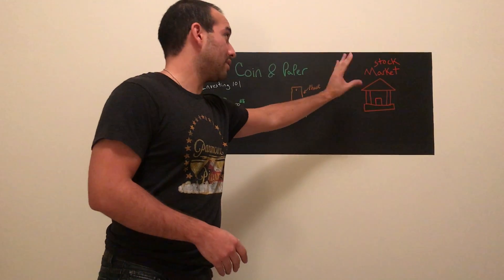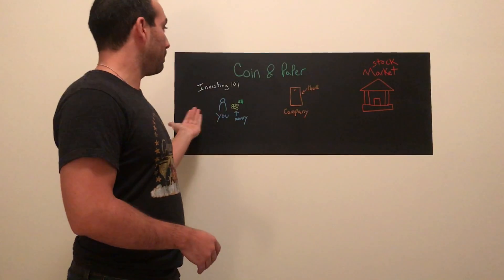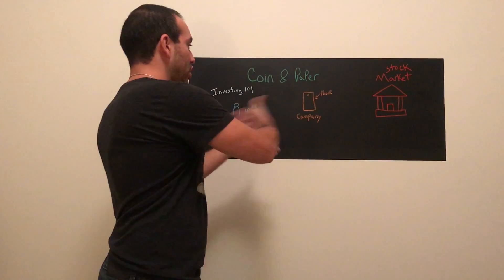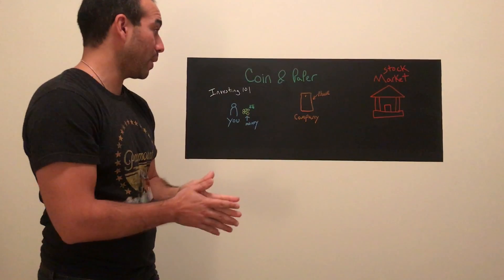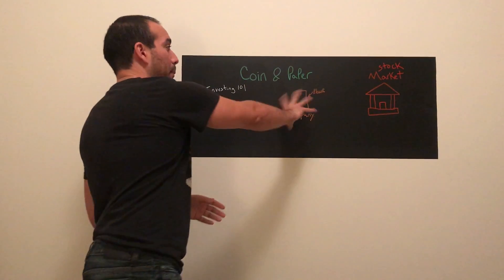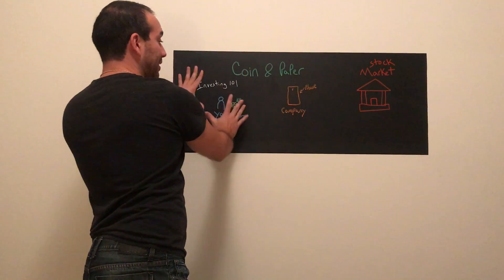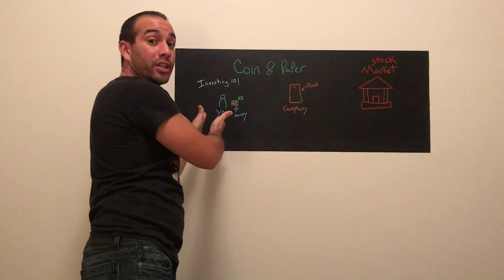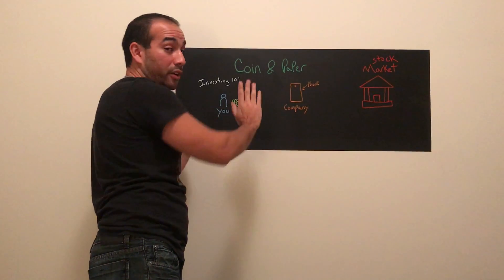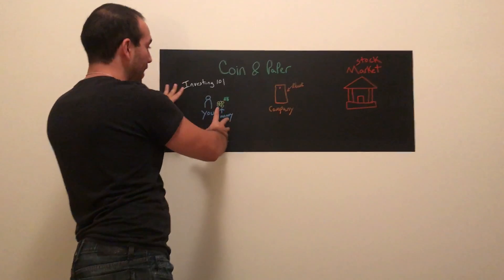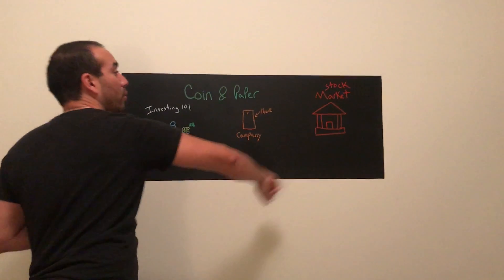But basically, that's the stock market. The stock market facilitates investors and other investors exchanging their shares. At this point, I just want to say: once the company issues their shares and it goes out to lots of investors, you are actually an investor at this point when you buy a stock.